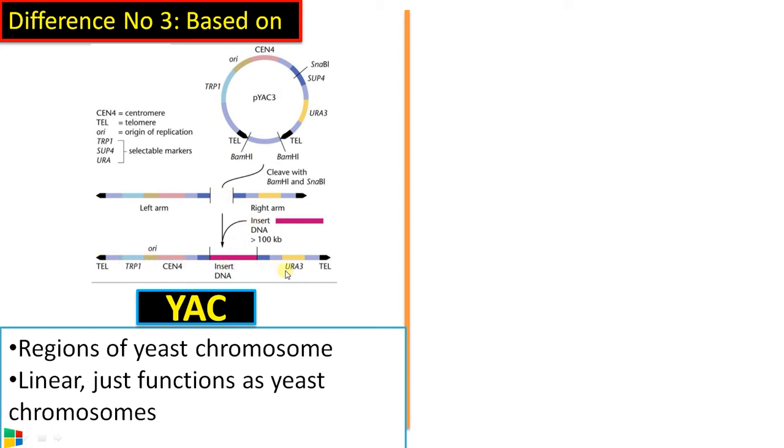So it becomes linear inside the host, just acting like a yeast chromosome with two telomeric ends for protection. So our gene of interest is inserted between this CEN4 region and also between this URA3. So there is an enzyme restriction site which is the enzyme SNAB1. So we have inserted our gene of interest in this site. So the vector becomes linear then we will be transforming this vector into yeast cell. So it just functions as yeast chromosome.